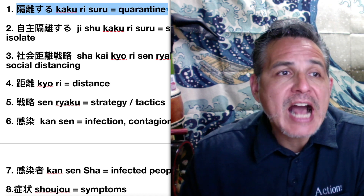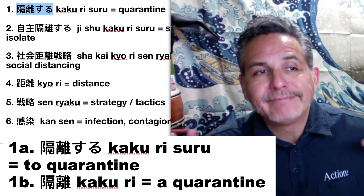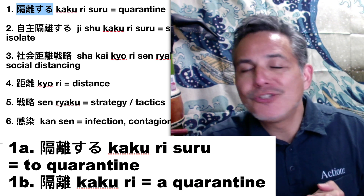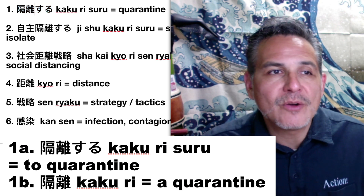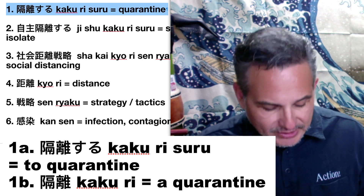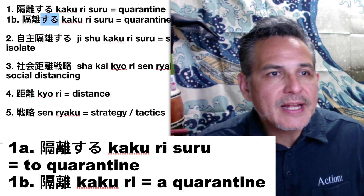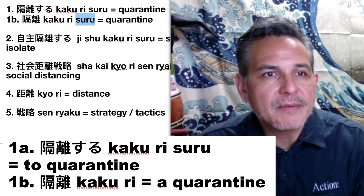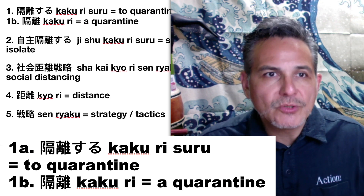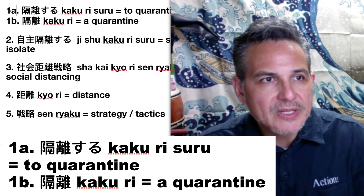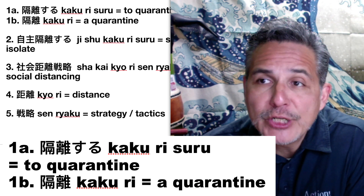Number one: how do you say quarantine in Japanese? You say kakuri suru. Remember, when you have pairs of kanji like this with a suru at the end, 99% of the time those are nouns when they stand alone. So if you take the same word and remove the suru, it becomes the noun — quarantine. With suru at the end, it means to quarantine.